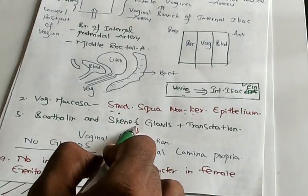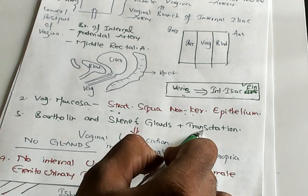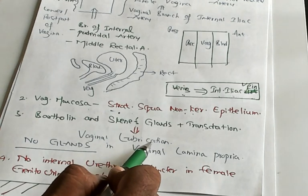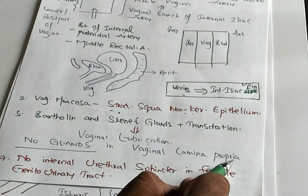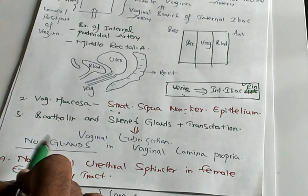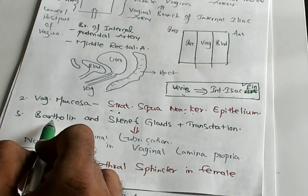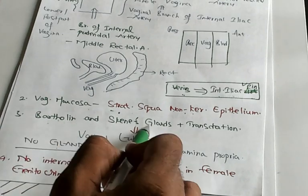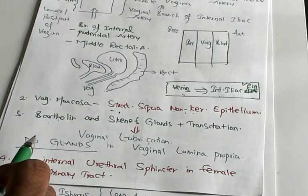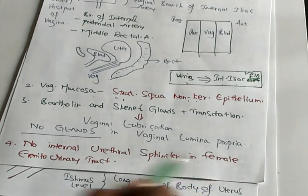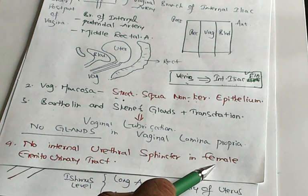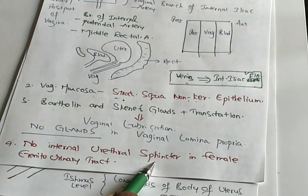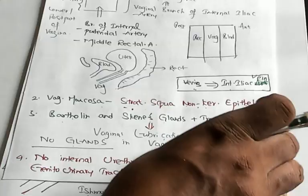Bartholin and Skene's glands and the transudation of the vessels, that is contributing for the vaginal lubrication during the time of coitus. One of the favorite MCQs of examiner: Does vaginal lamina propria have any glands? No sir, no glands. All that lubrication is because of Bartholin's glands, Skene's glands and the transudation. There is a small difference between female and male genitourinary tract. If you look at the male, there is an internal urethral sphincter, but that is not there in the case of the female.